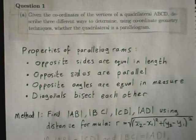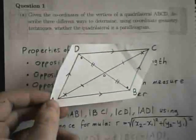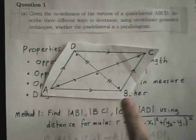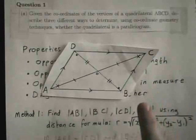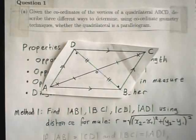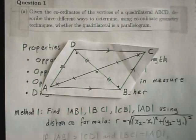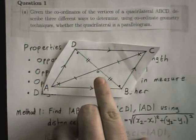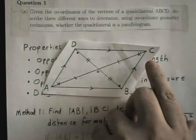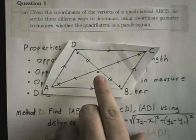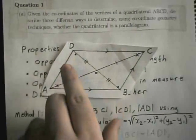The last point is that the diagonals of a parallelogram bisect each other. So the diagonals are the lines from A to C and from B to D. When I say they bisect each other, the distance from A to the centre point is equal to the distance from the centre point to C, and the distance from B to the centre point is equal to the distance from the centre point to D.